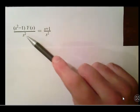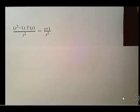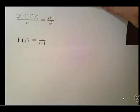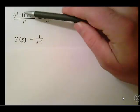And now, so the S squareds cancel out. So I'm left with Y of S equals S plus 1 over S squared minus 1.